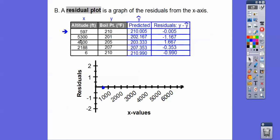This next one is going to be at 5,300 and negative 1.67 — so 5,300 is over here and negative 1.67 is somewhere down there. And then this one is going to be 4,600 with 1.667. That's our residual plot of that linear regression line, or trend line as our book calls it.